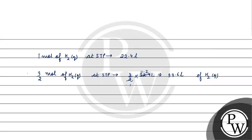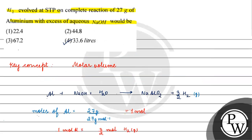Coming back to the question, the correct answer is option four: 33.6 liters of hydrogen gas will be liberated when 27 grams of aluminium reacts with excess of aqueous NaOH. I hope you understood it well — thank you, all the best!